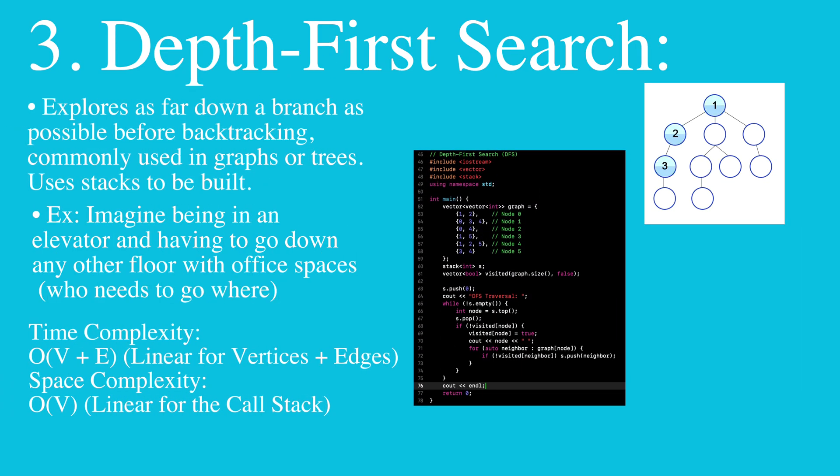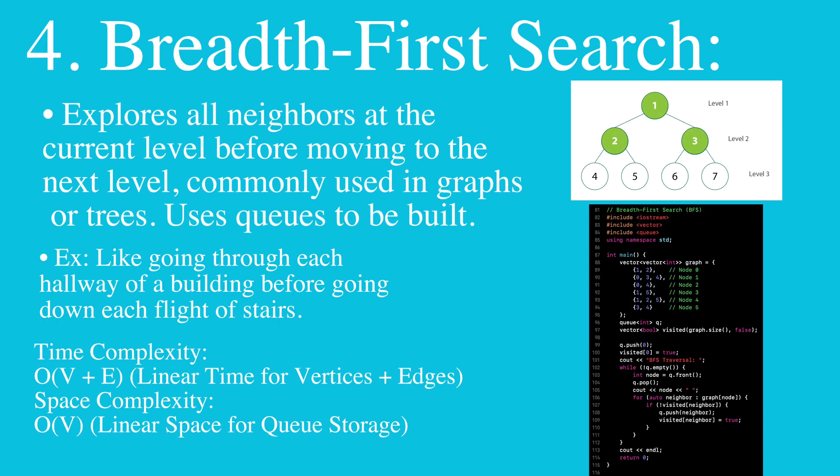Depth first search explores as far down a branch as possible before backtracking, commonly used in graphs or trees. In breadth first search, we explore all neighbors at the current level before moving to the next level.